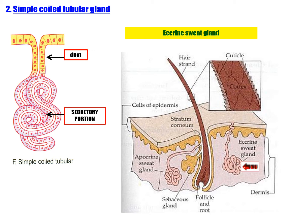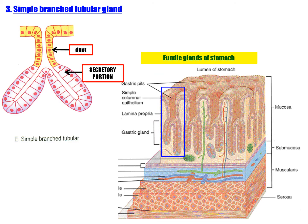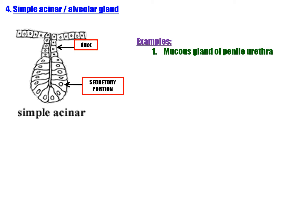Third: simple branched tubular gland — here there are two tubules dividing into a branching pattern with a duct. Example: fundic gland of the stomach (gastric gland). This is an example of a simple branched tubular gland.